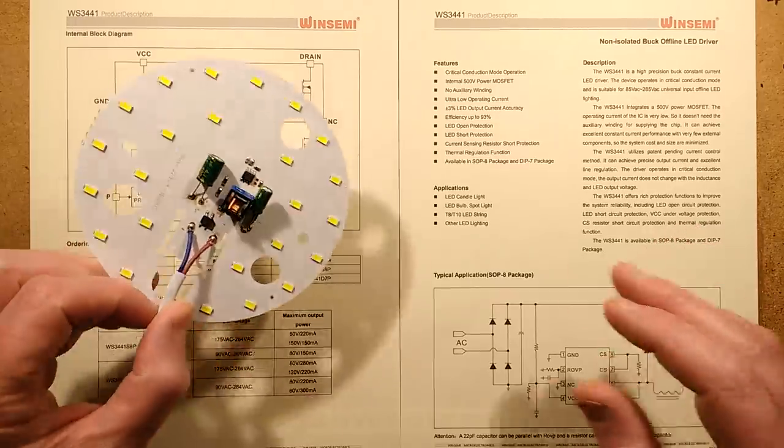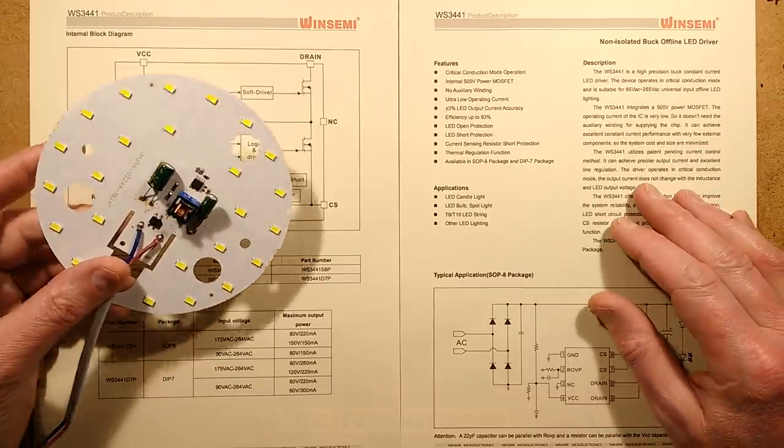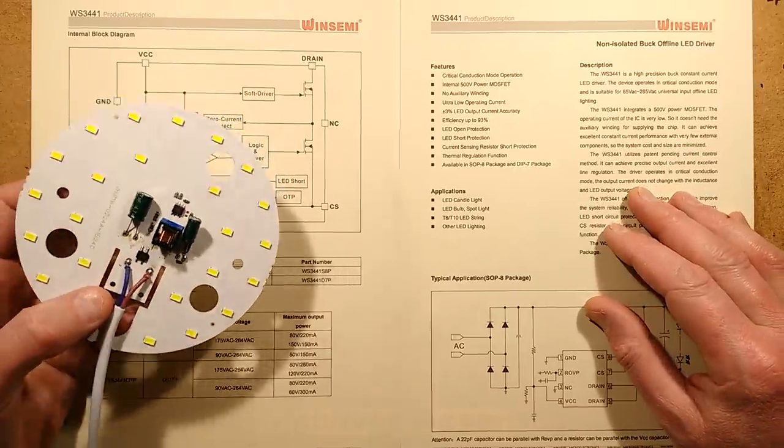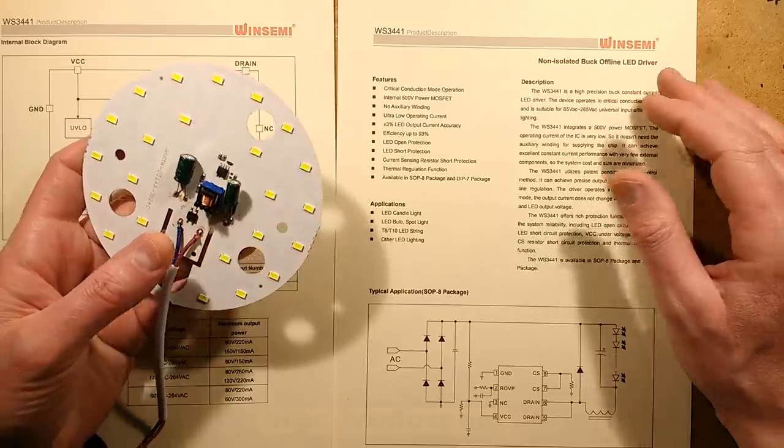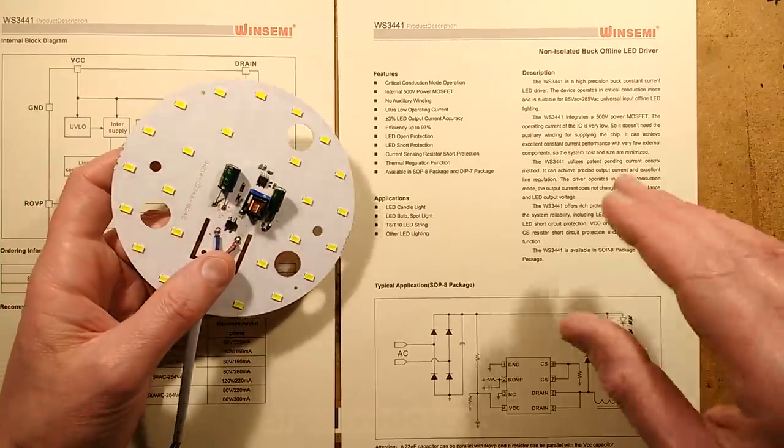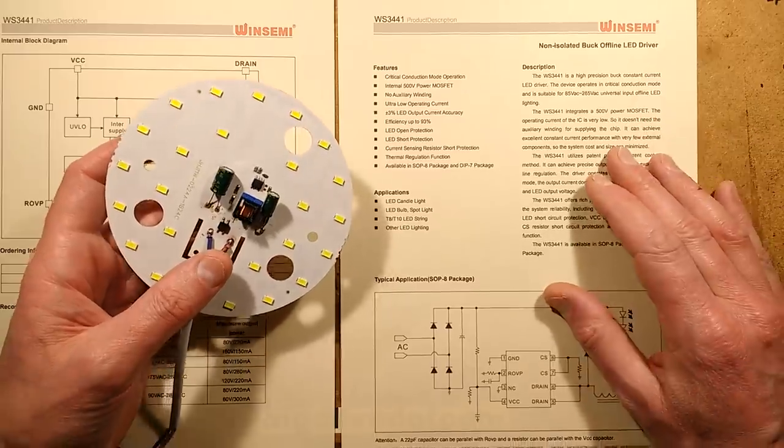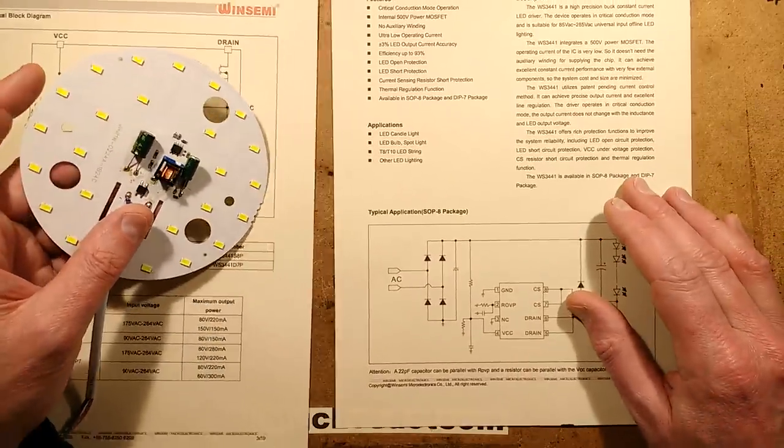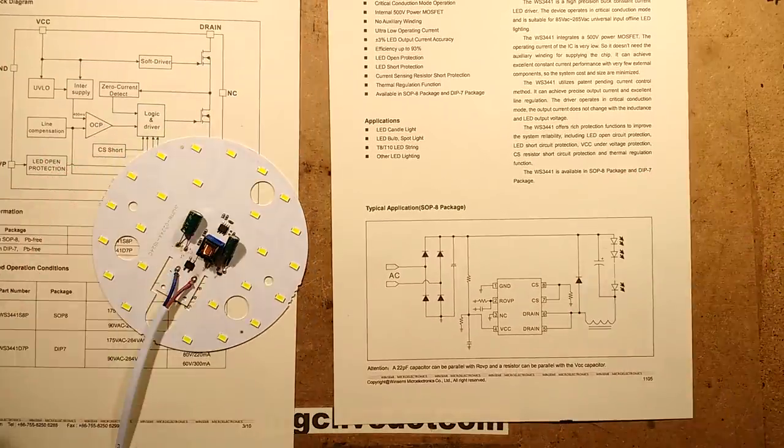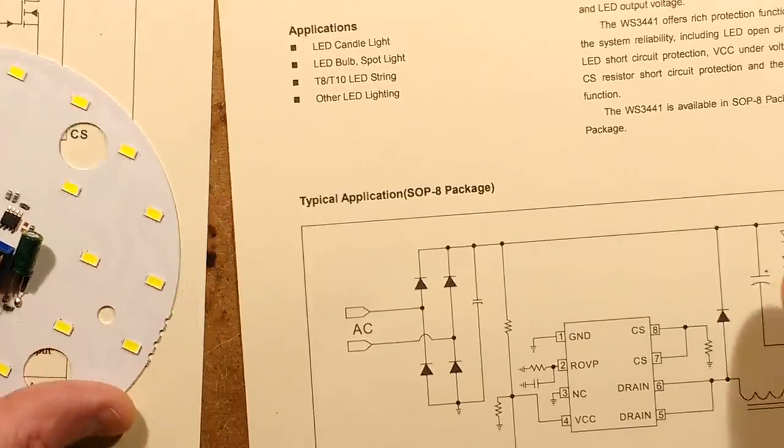Tell you what, I'm going to go and see if I can look up that chip and we'll investigate it and see how this driver works. For a refreshing change it turns out that chip was very easy to find. It's made by WinSemi and it is a non-isolated buck offline LED driver. Basically speaking it's a buck current regulator which just operates on mains voltage directly.